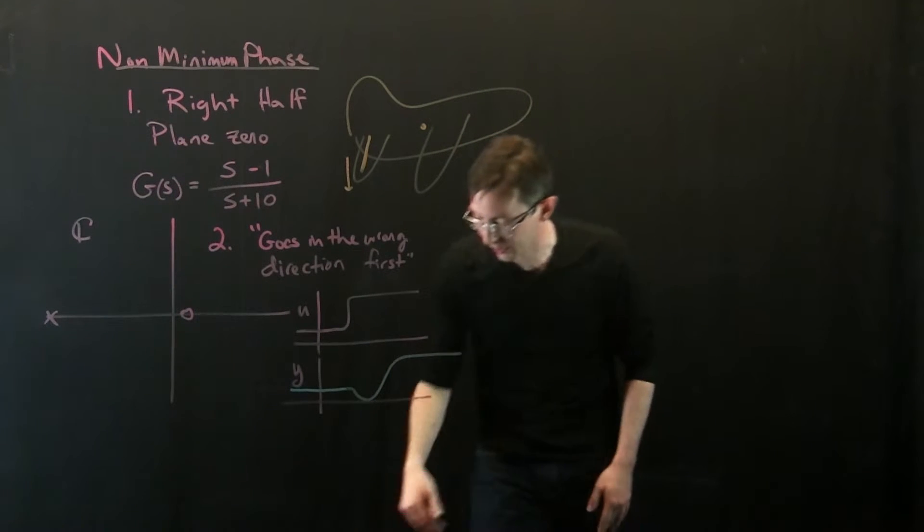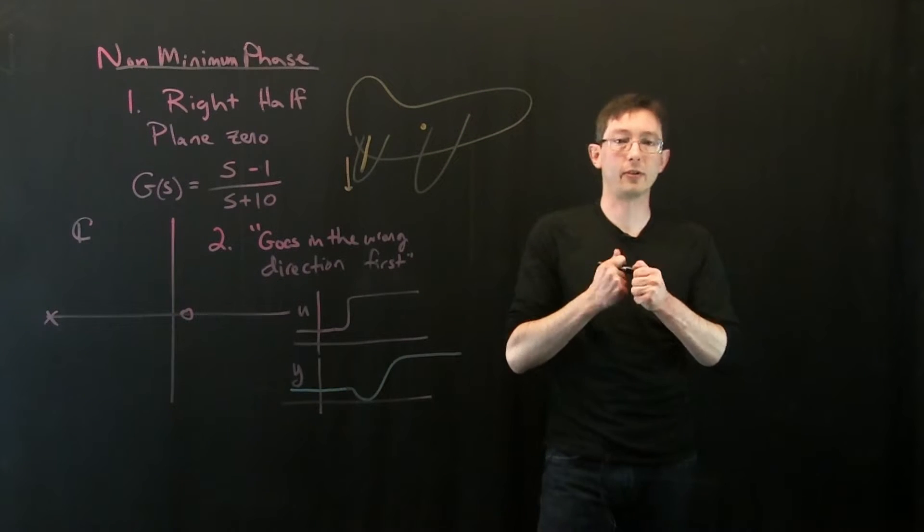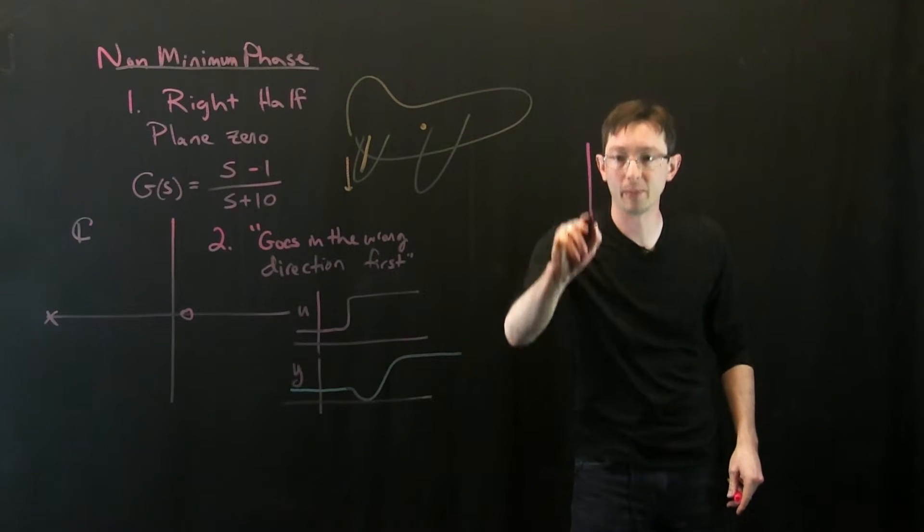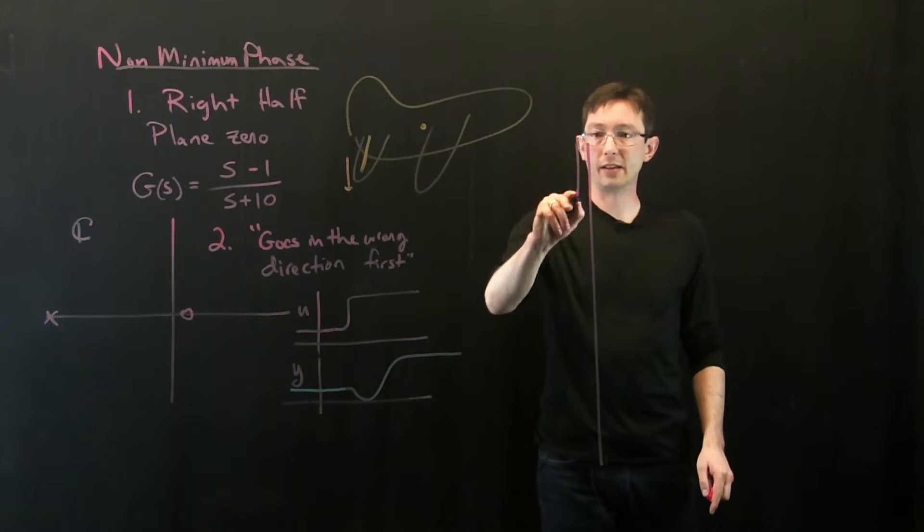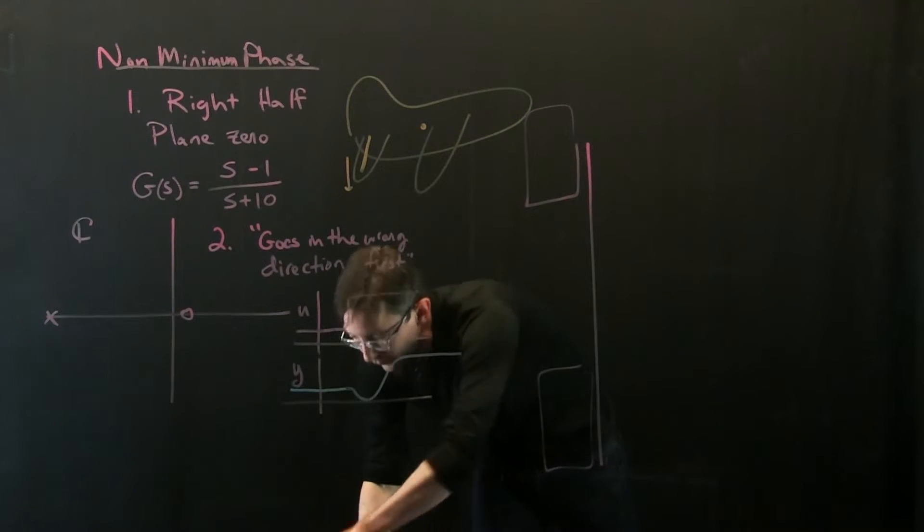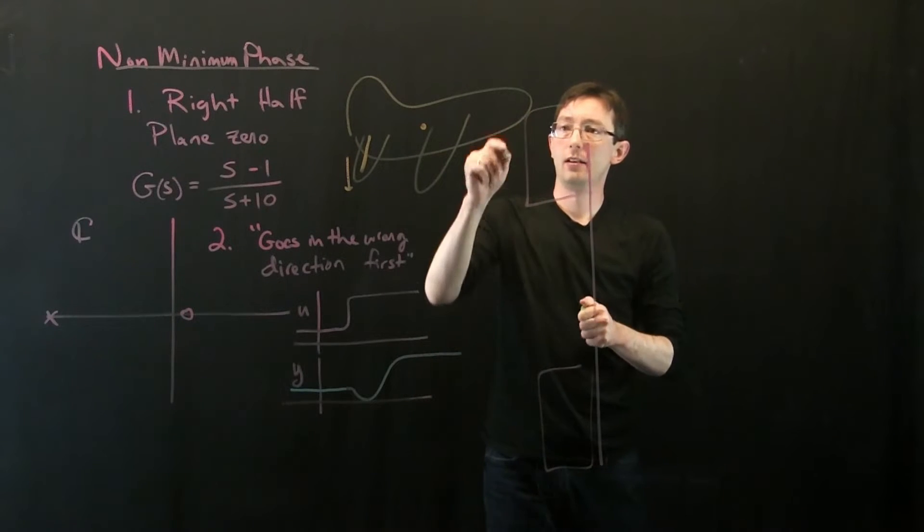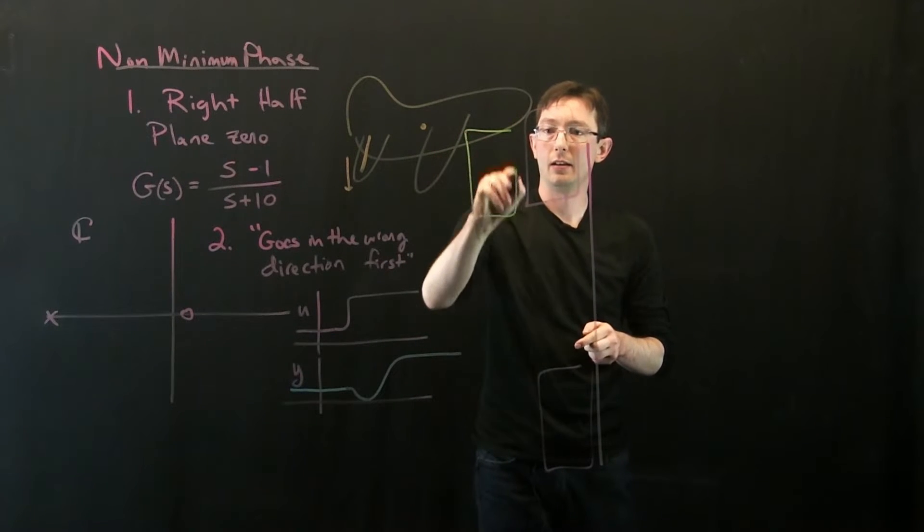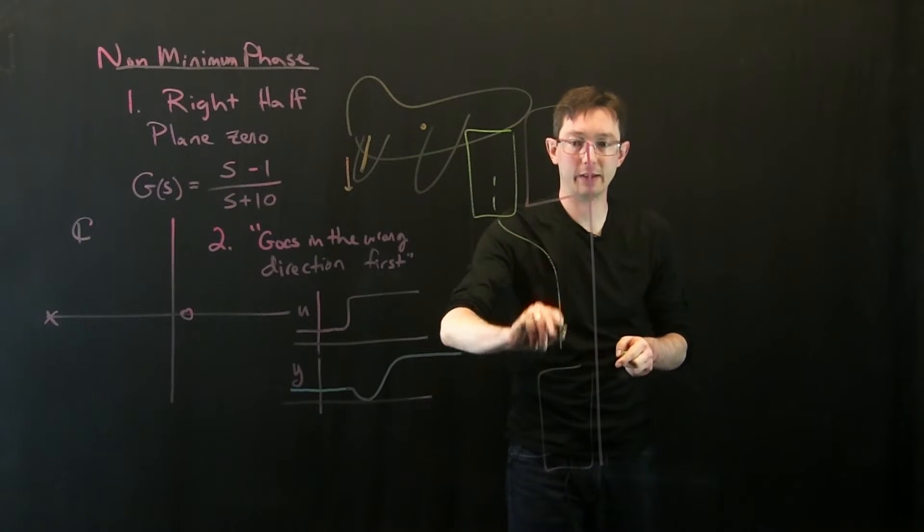Another example is, let's say you're trying to parallel park. So I'm just kind of going through all the classic examples. So parallel parking, okay, so there's some car here, there's some car here. And I am this car, and I'm going to try to back up into this spot here.